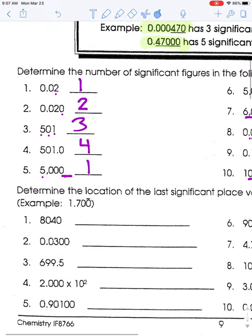Now let's do another practice: placing a bar over the last significant figure in each number. For example, 1.7300 — we put a bar over the last zero because it's a significant trailing digit after the decimal. In number one, 8040: the eight and four are significant, the zero between them is significant, but the final trailing zero has no decimal point so it's not significant. We put the bar over the four — that's the last significant figure.